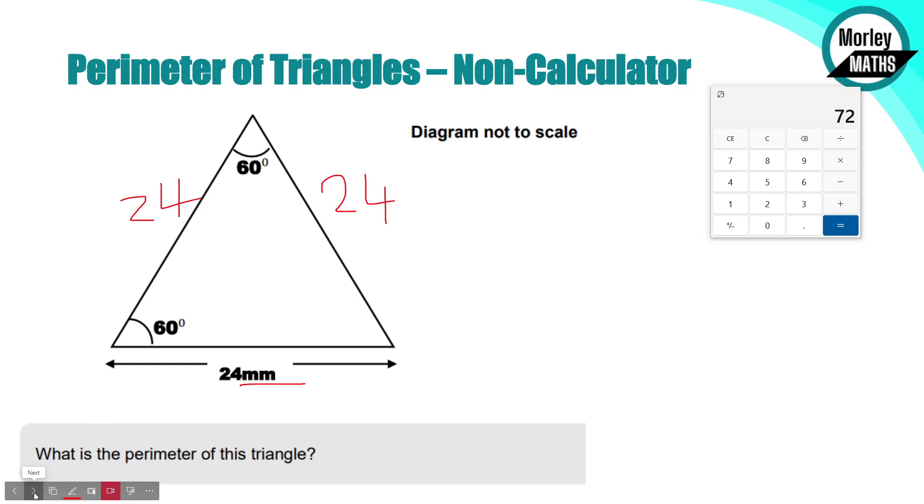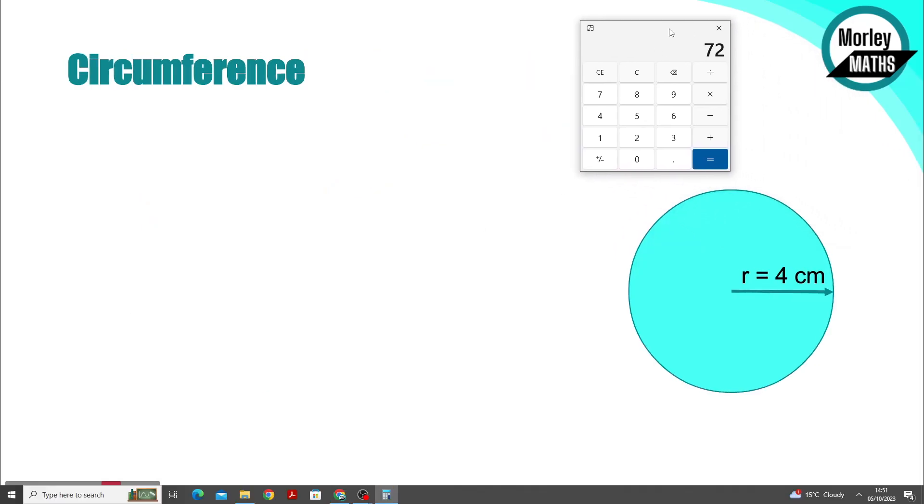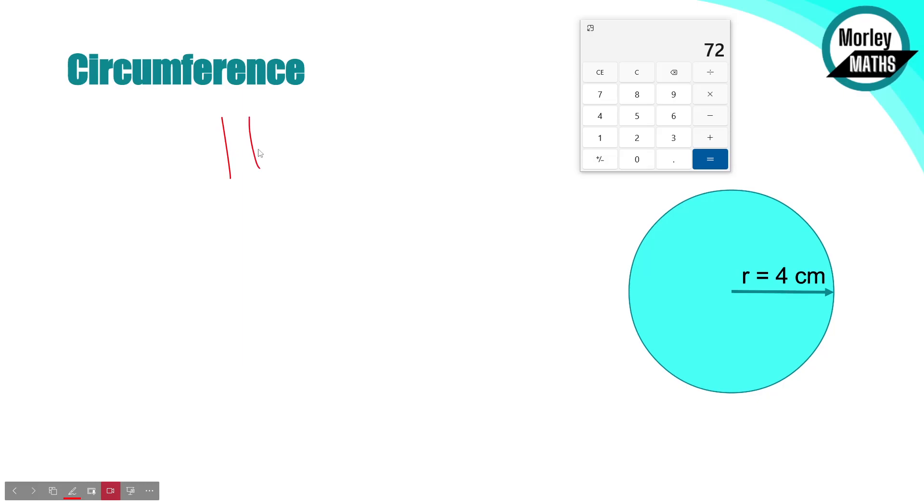Where it perhaps gets a little bit more difficult is with circumference. Circumference is essentially the perimeter around a circle. We do have a formula for circumference, which is pi d. That basically just means pi times the diameter of a circle. Pi is normally 3.14 or 3.142. Your exam paper will tell you what to use for that. We'll leave it as 3.142 here.